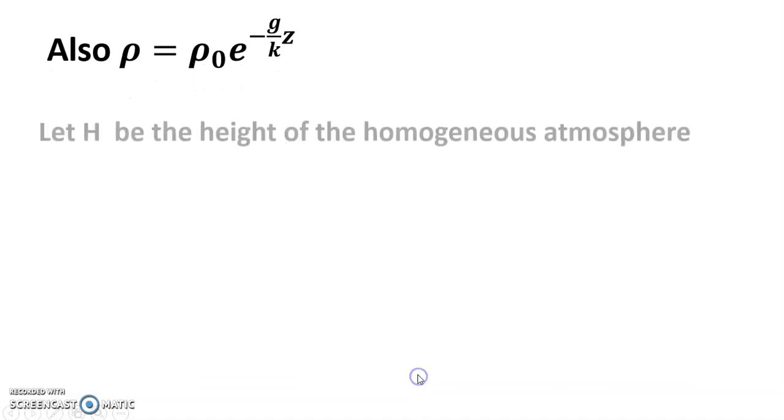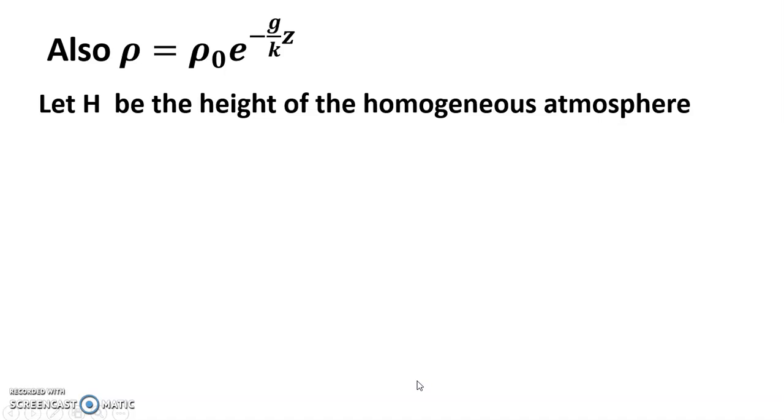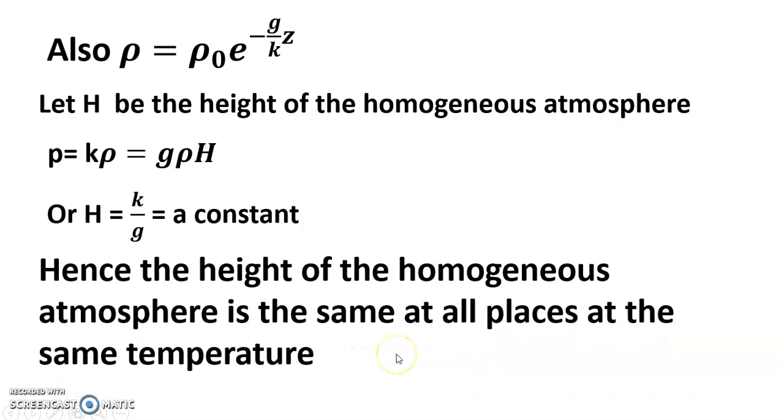Let H be the height of the homogeneous atmosphere. If ρ is the density and p is its pressure at any point under consideration, then p = kρ = gρH, so H = k/g = a constant. Hence the height of the homogeneous atmosphere is the same at all places at the same temperature.